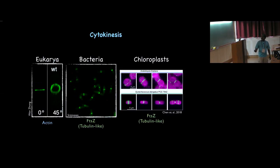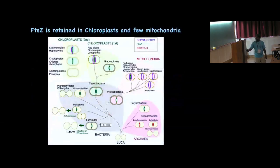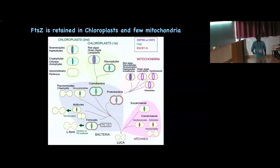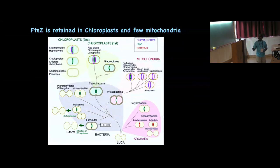In eukaryotes, division is brought about by actin and myosin. In bacteria it is FtsZ, the tubulin-like protein, and in chloroplasts it is also FtsZ — because chloroplasts evolved from bacteria. Cyanobacteria was the lineage that developed into chloroplasts; in fact one of the chloroplasts in glaucophytes still has a peptidoglycan cell wall. It has become clear that all chloroplasts utilize FtsZ to form this inner ring.